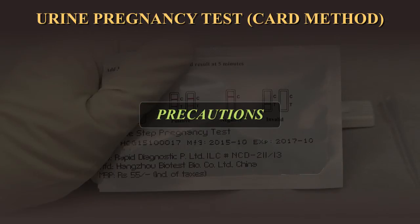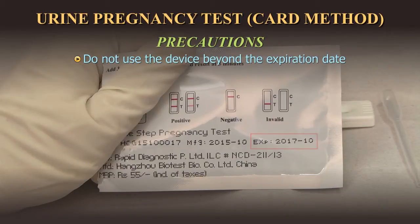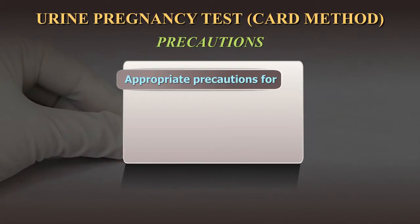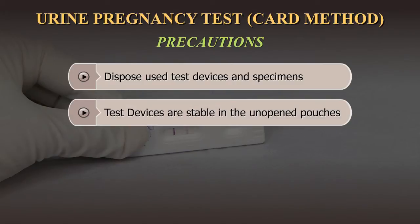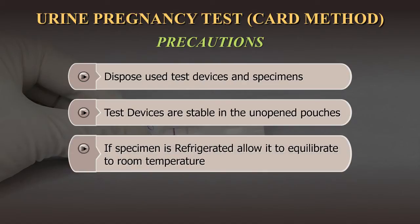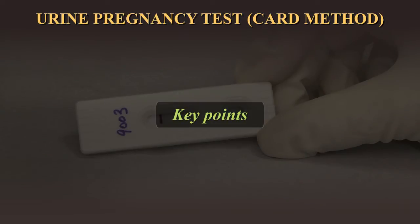Precautions: Do not use the device beyond the expiration date printed on the kit or foil pouch. Use appropriate precautions for the collection, handling, and storage of specimens. Dispose of all used test devices, pipettes, droppers, and specimens in suitable biohazardous waste containers. Test devices are stable in unopened foil pouches until the expiration date; do not remove the test device from the pouch until needed. If the specimen has been stored refrigerated, allow it to warm to room temperature before use.